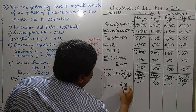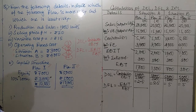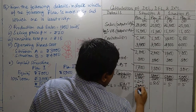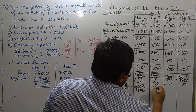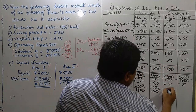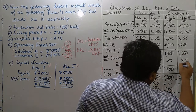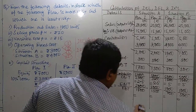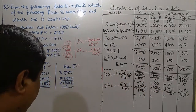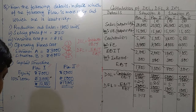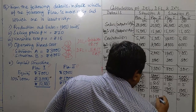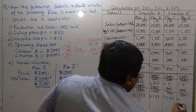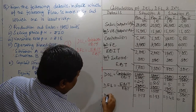Next, we focus on financial leverage. The formula of DFL is EBIT divided by EBT. Calculating one by one: situation A Plan 1 is 2000 divided by 1700; situation A Plan 2 is 2000 divided by 1500; situation B Plan 1 is 1000 divided by 700; situation B Plan 2 is 1000 divided by 500. The results are: 1.17, 1.33, 1.42, and 2 respectively.